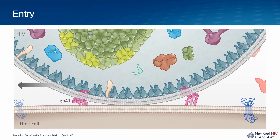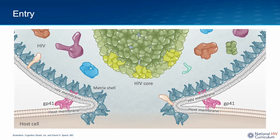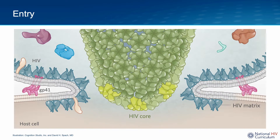The co-receptor binding triggers the folded GP41 to spring open and latch onto the surface of the host cell. The GP120 subunits are then cast off and are no longer involved in viral entry. The GP41 subunit has a unique ability to fold back on itself with the two main GP41 domains sticking together like Velcro. This folding triggers the virion to roll across the surface of the host cell membrane, creating more interactions between the HIV envelope and the host receptors, pulling the HIV and host membranes together and initiating membrane fusion.